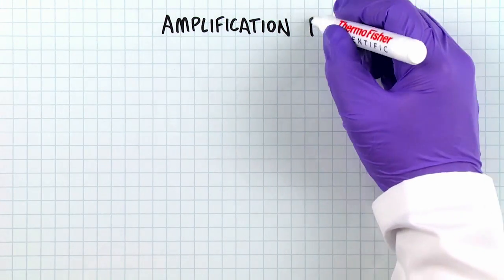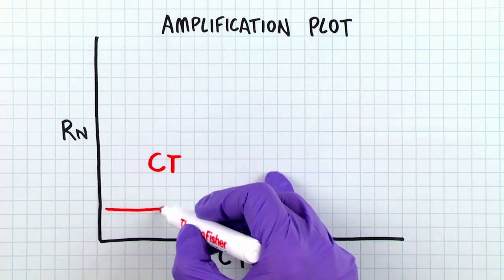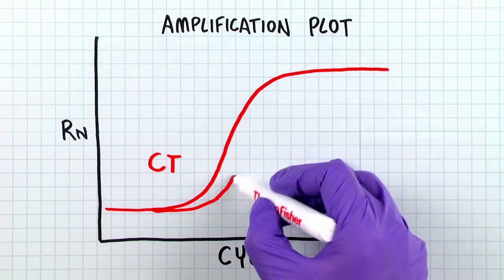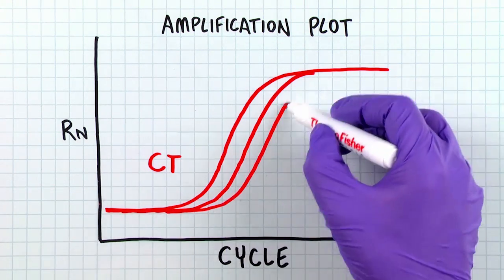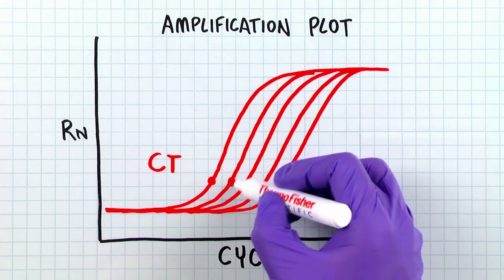During each PCR cycle, the amount of fluorescent signal for each standard in the dilution series is measured. When the fluorescent signal crosses the detection threshold, the cycle number is recorded as a CT value, or a threshold cycle value.